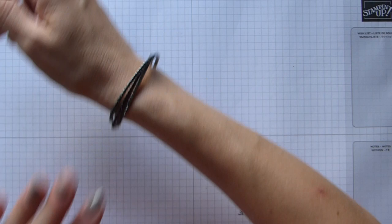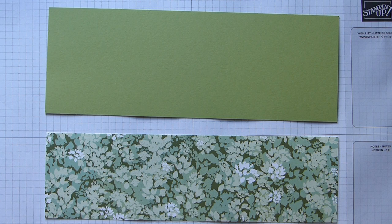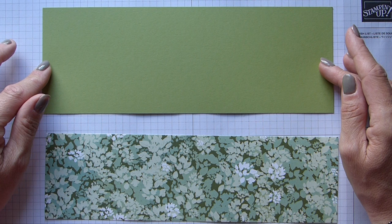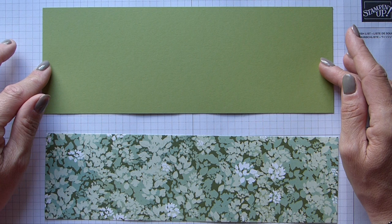Let's go ahead and make it. You're going to need a sheet of cardstock and a sheet of DSP. Your cardstock is 10 and a half by 3 and 3 quarters, that's 26 and a half by 8 and a half centimeters. Your DSP will be 10 and a half by 3 inches, which is 26 and a half by 7 and a half centimeters.